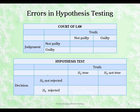Let's consider the truth and the judgment that we make. The truth might be that a person is not guilty or that they are guilty, and a judgment could be that they are found guilty or not guilty. If they are not guilty and we find them not guilty, we've made the correct decision. If they are guilty and we find them guilty, we've made the right decision. But if a person is guilty and we find them not guilty, or if we find a person not guilty but they are actually guilty, then we've made an error.